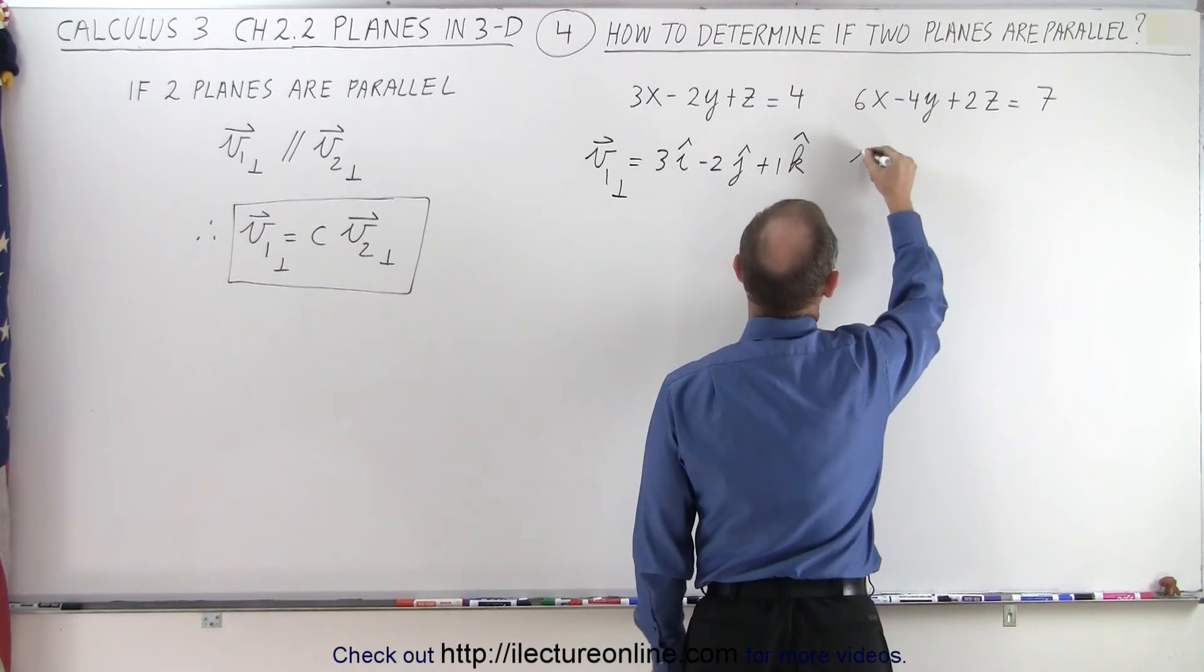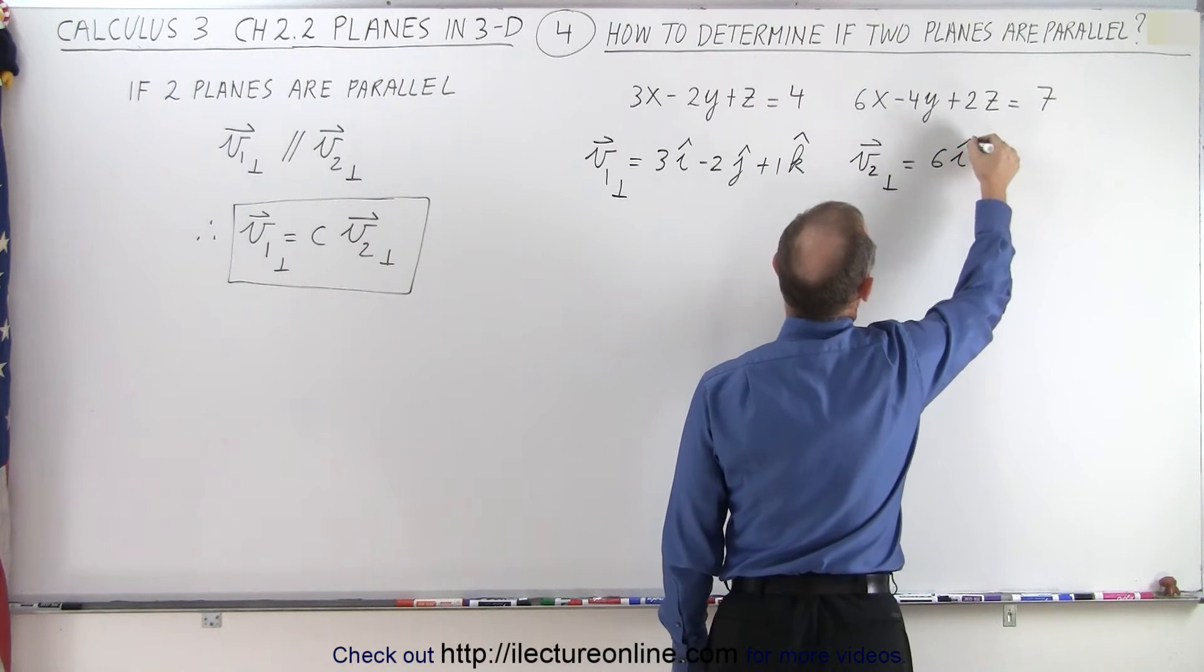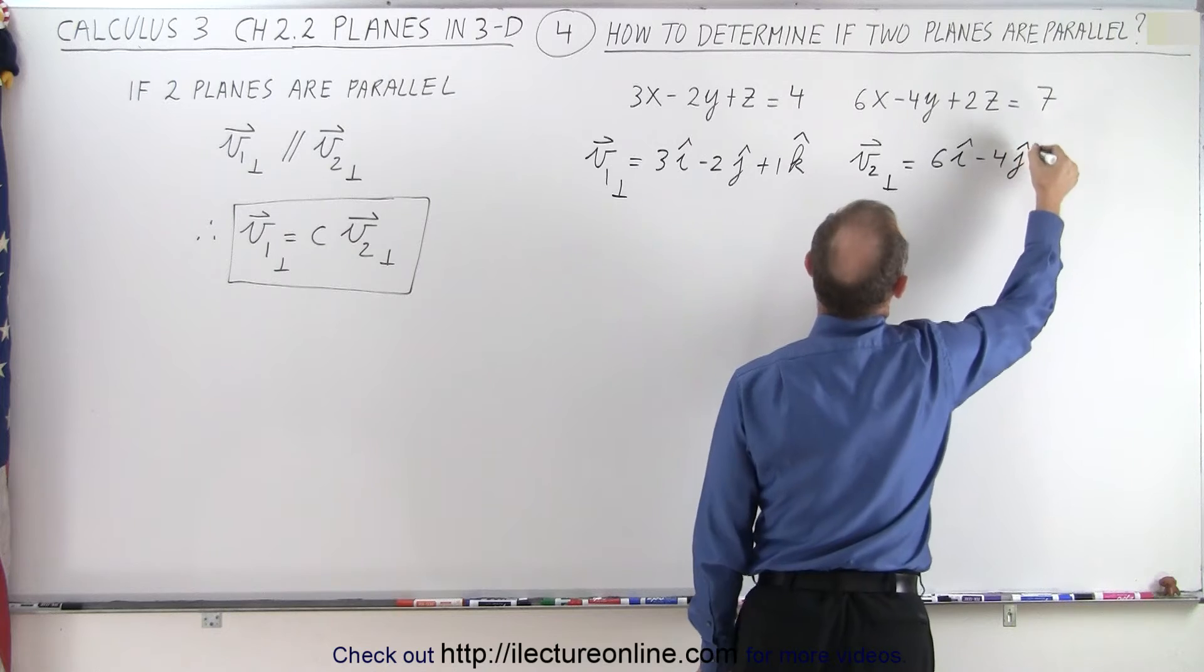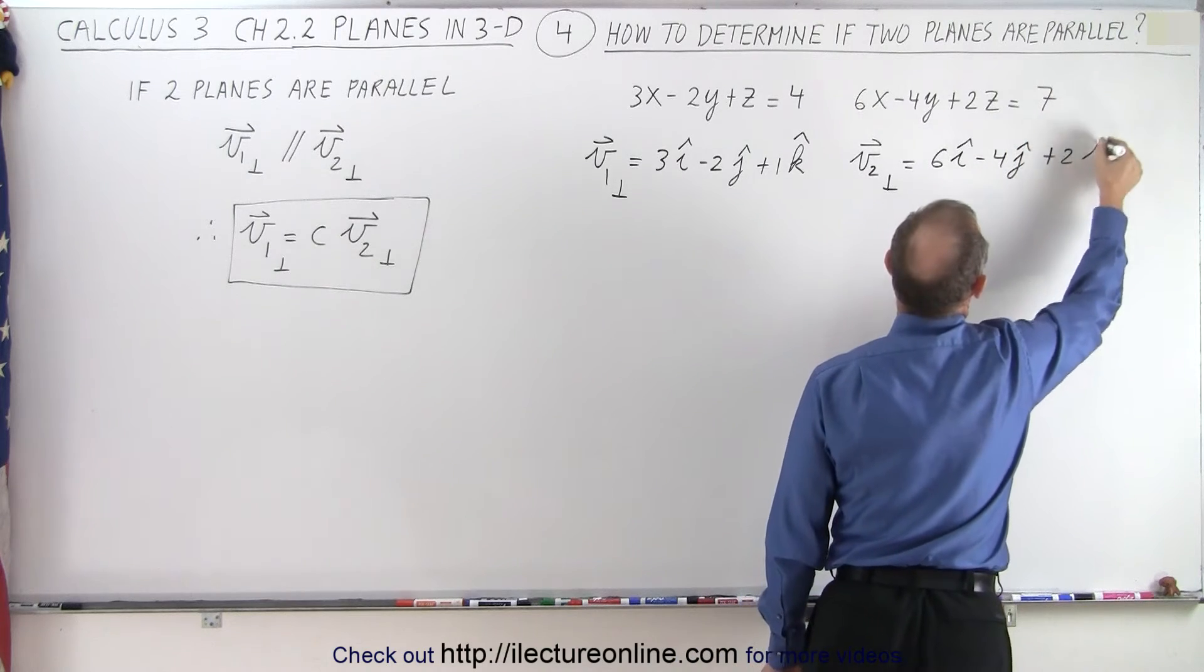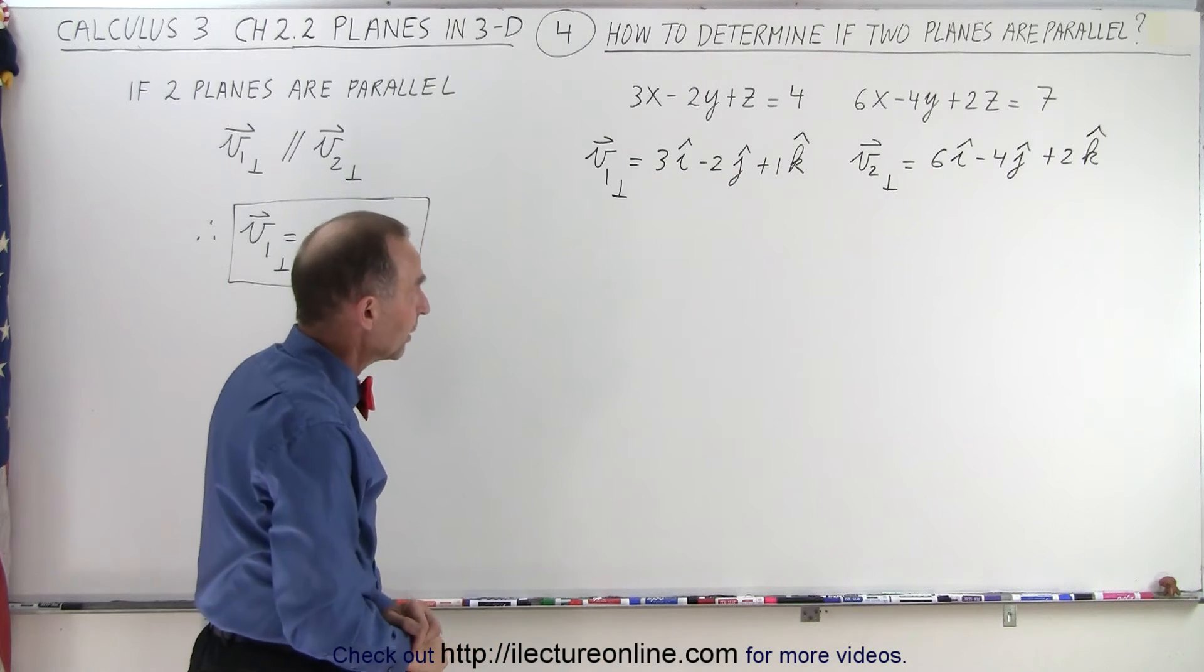Same over here. We take vector 2, perpendicular, that's equal to 6 in the i direction, minus 4 in the j direction, and plus 2 in the k direction. So essentially, those are the components of the perpendicular vector.